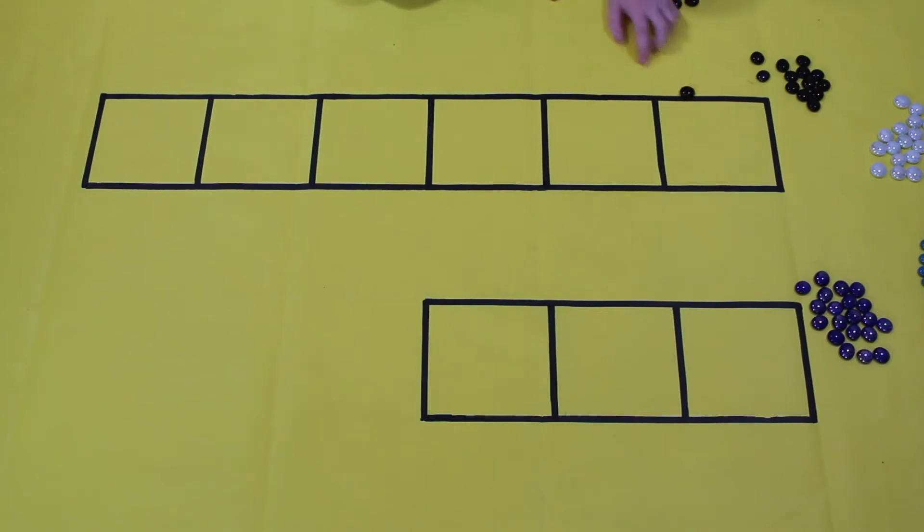This column over here is the 1 column, as you could expect, and this is the x column. You probably saw it coming: x squared, x cubed, x to the 4th, x to the 5th.